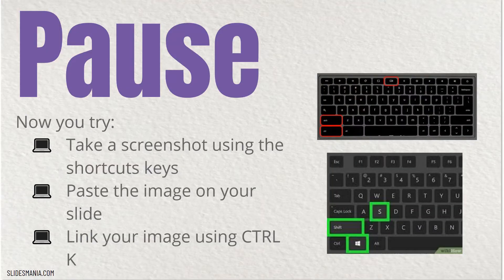Now it's time to pause the video once again. You're going to take a screenshot using the shortcut keys — on this slide I have the Chromebook shortcut in red and the PC shortcut in green. You're then going to paste that image on your slide for your portfolio, and then link your image using Ctrl+K so that when your parents click they'll be able to see it. When you've done this task, come back to this video and unpause.